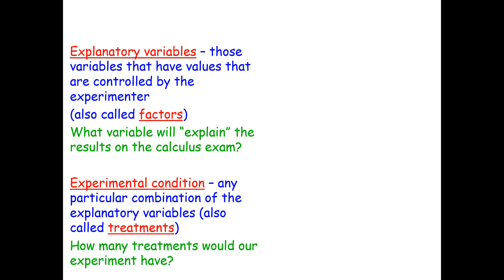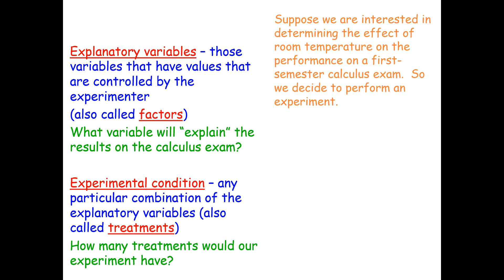Explanatory variables are those variables that have values that are controlled by the experimenter. These are also called factors. In our room temperature experiment, what variable will explain the results on the calculus exam? The room temperature is our explanatory variable.